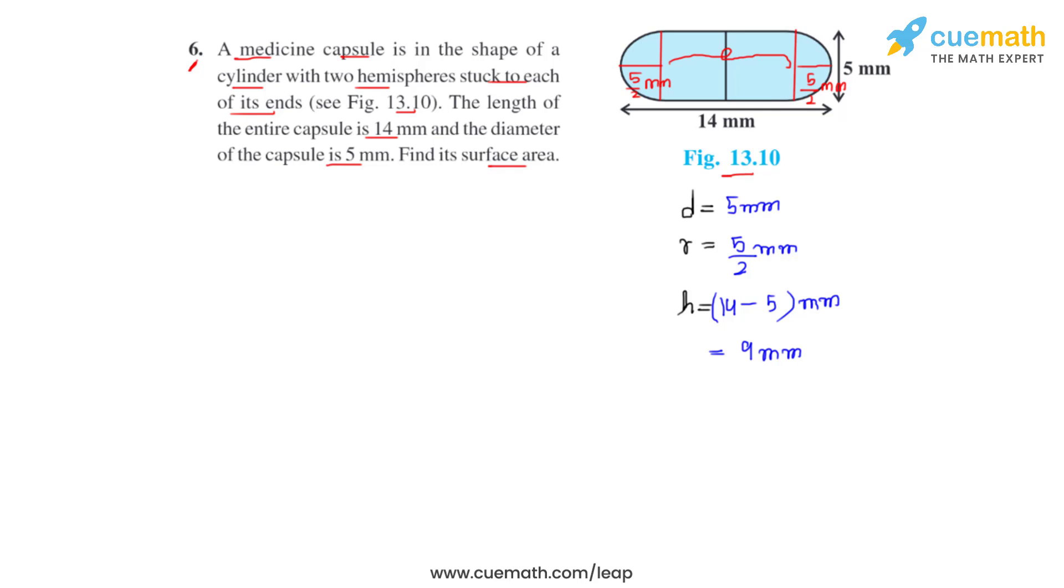Now our main objective was to find the total surface area of the capsule, and that, as we can clearly see from the figure, can be found by having 2 times the curved surface area of hemisphere plus the curved surface area of cylinder.